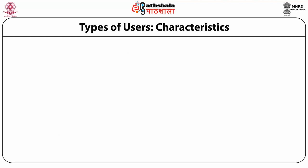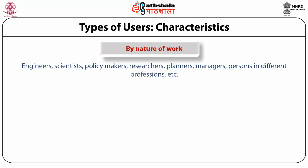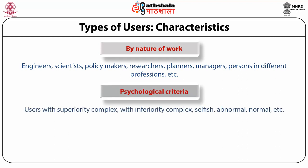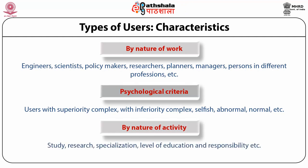The next type of division is based on characteristics. First is by nature of work, like engineers, scientists, policy makers, researchers, planners, managers, persons in different professions, etc. Second is the psychological criteria, on which we can divide the users into categories such as users with superiority complex, with inferiority complex, selfish users, abnormal, normal, etc. Third, we can divide by the nature of activities like study, research, specialization, level of education, and responsibility, etc.